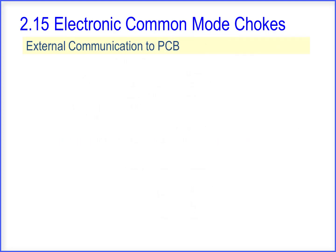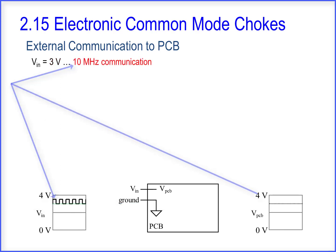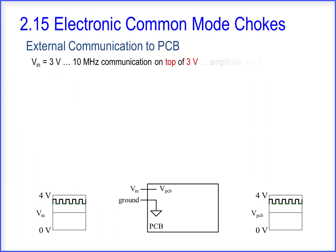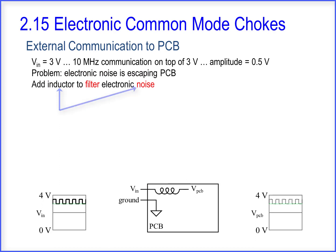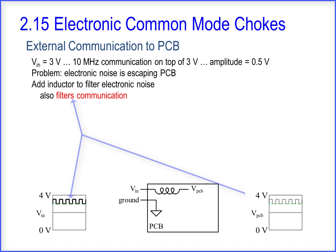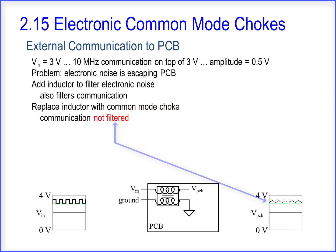What is the value of using a common mode choke for external communication to a PCB? With a 3-volt input and a 10 MHz communication on top of the 3 volts with an amplitude of 0.5 volts, electronic noise is escaping the PCB. Adding an inductor will filter the electronic noise, but unfortunately it also filters the communication. Replacing the inductor with a common mode choke allows the communication to pass through without being filtered.